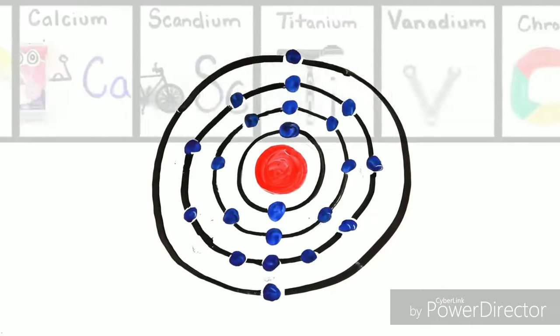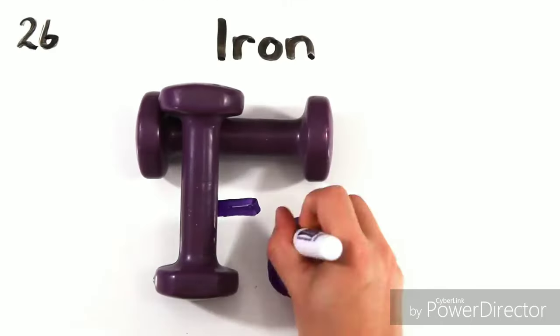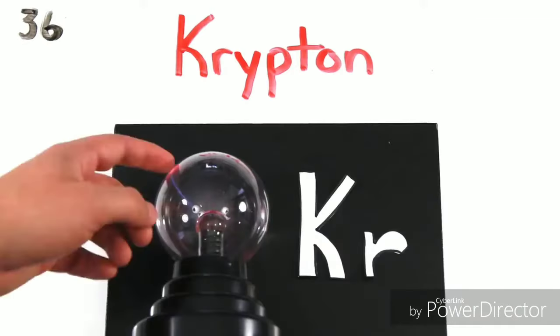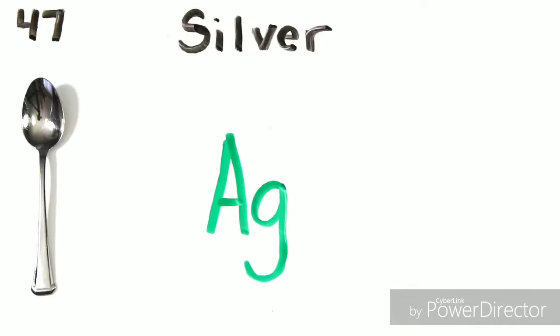Iron is the 26th, then cobalt, nickel coins you get. Copper, zinc and gallium, germanium and arsenic, selenium and bromine film while krypton helps line up your room. Molybdenum, silverware, then cadmium and indium, tin.